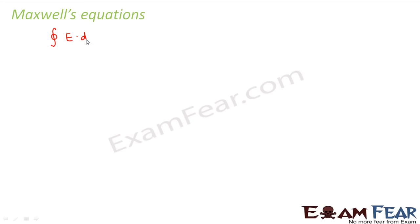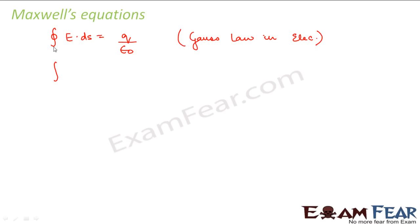Maxwell's contribution in modifying Ampere's circuital law was so significant that a set of four equations — given by different scientists — came to be known as Maxwell's equations. The first equation is ∮E·dS = q/ε₀, which is Gauss's law in electrostatics. Its counterpart in magnetism is the second equation: ∮B·dS = 0, which is Gauss's law in magnetism.